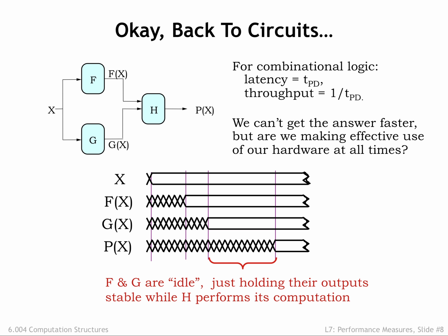Observe that after producing their outputs, the F and G modules are sitting idle, just holding their output stable while H performs its computation. Can we figure out a way for F and G to get started processing the next input while still letting H do its job on the first input?